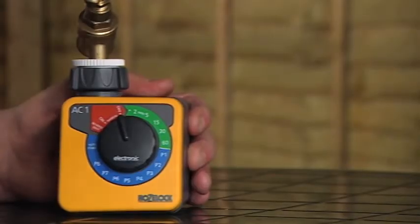So we fitted the AC1 with the two LR14 or size C batteries, and now we're going to program the timer for the watering duration that we've selected.